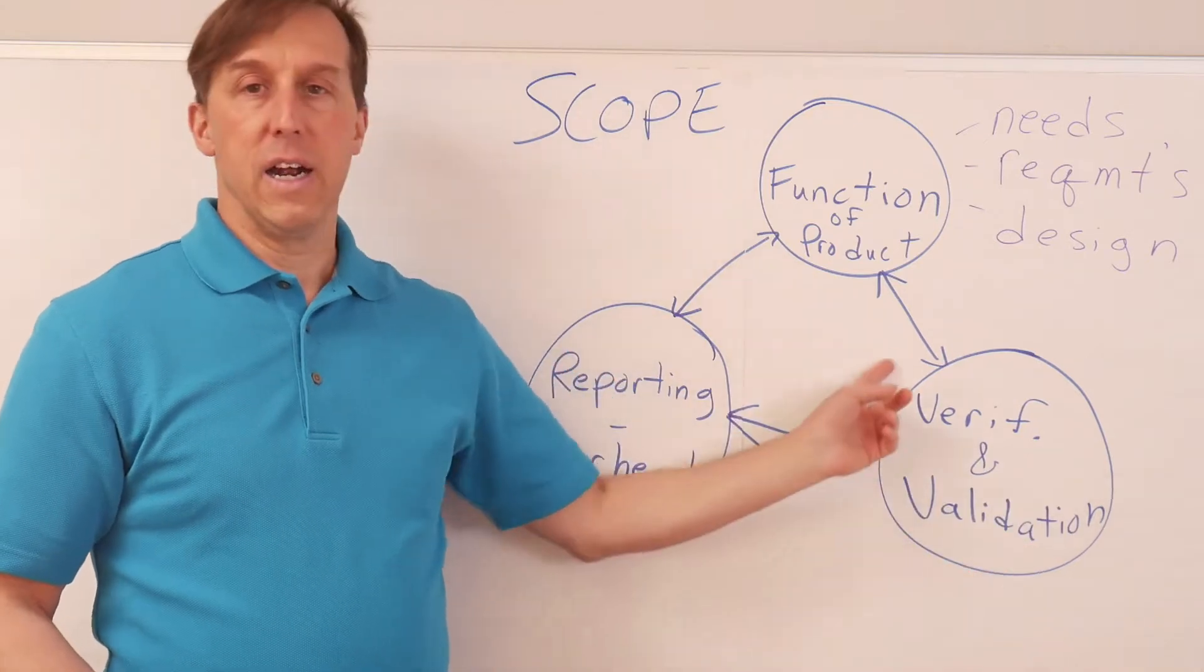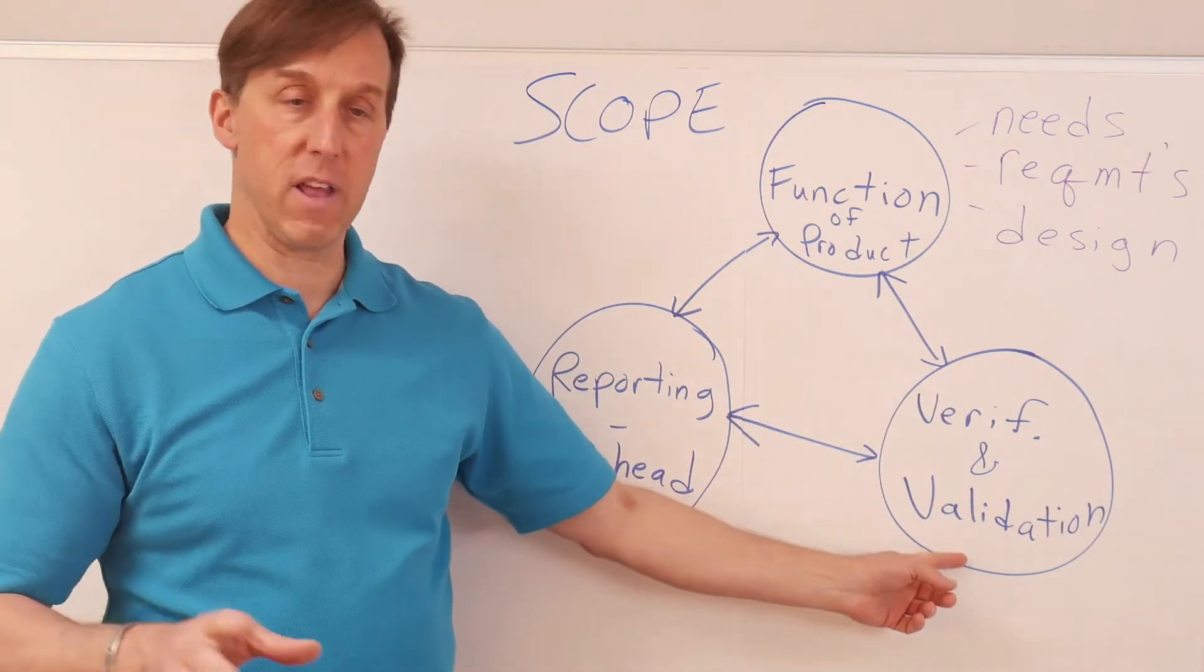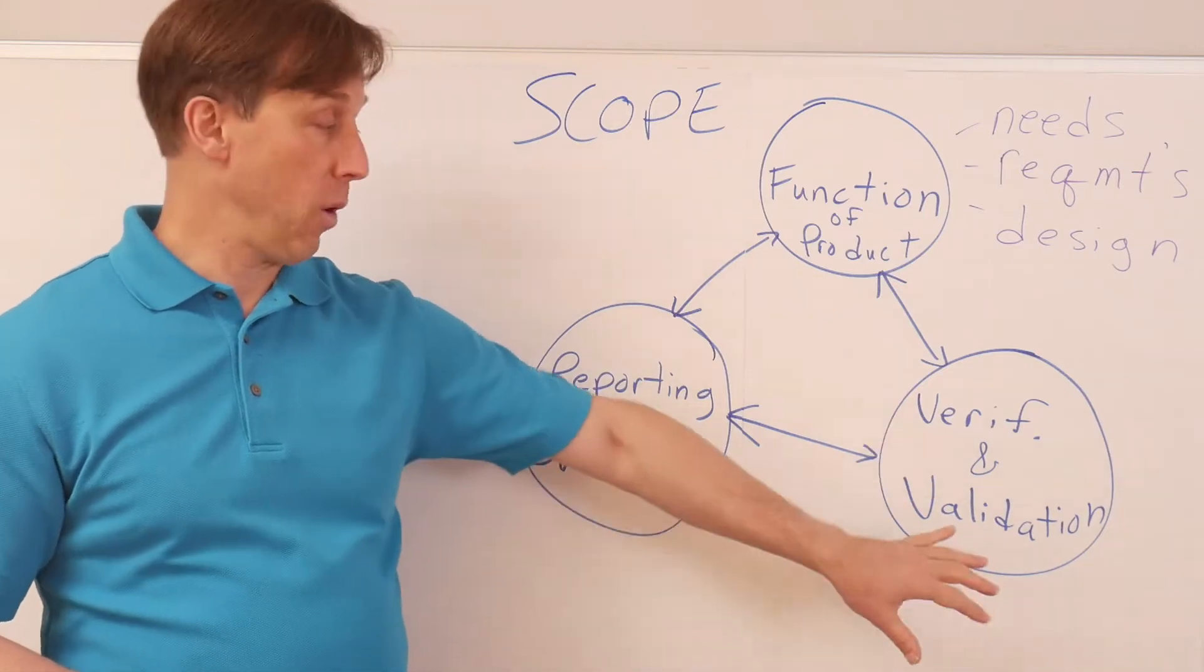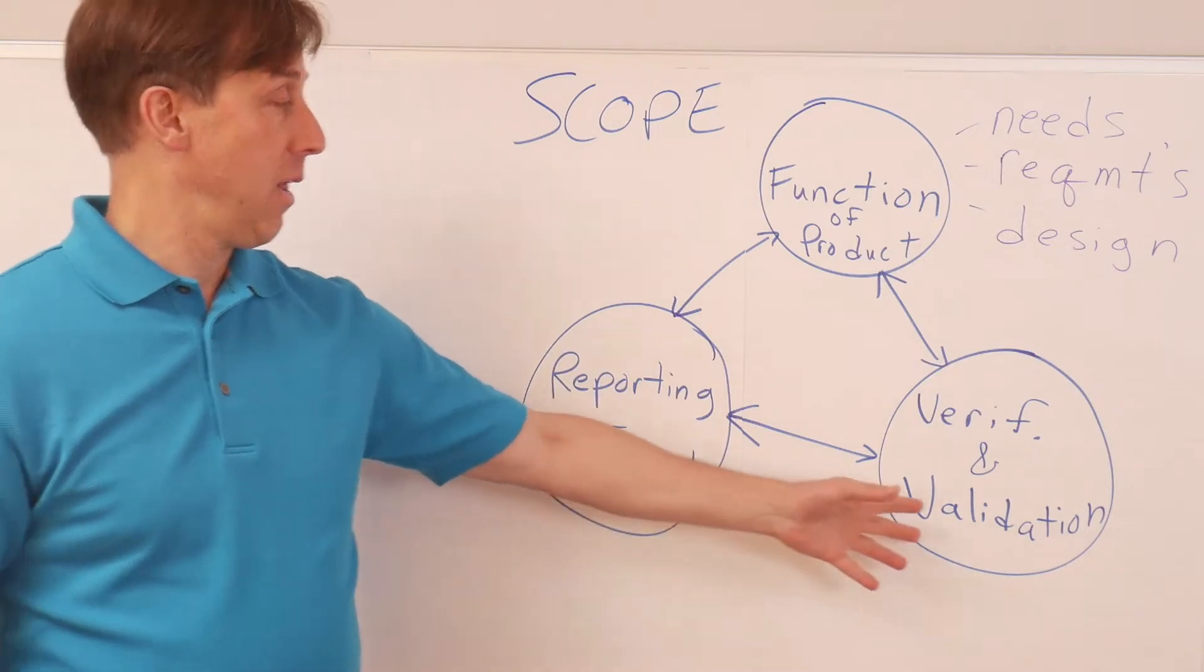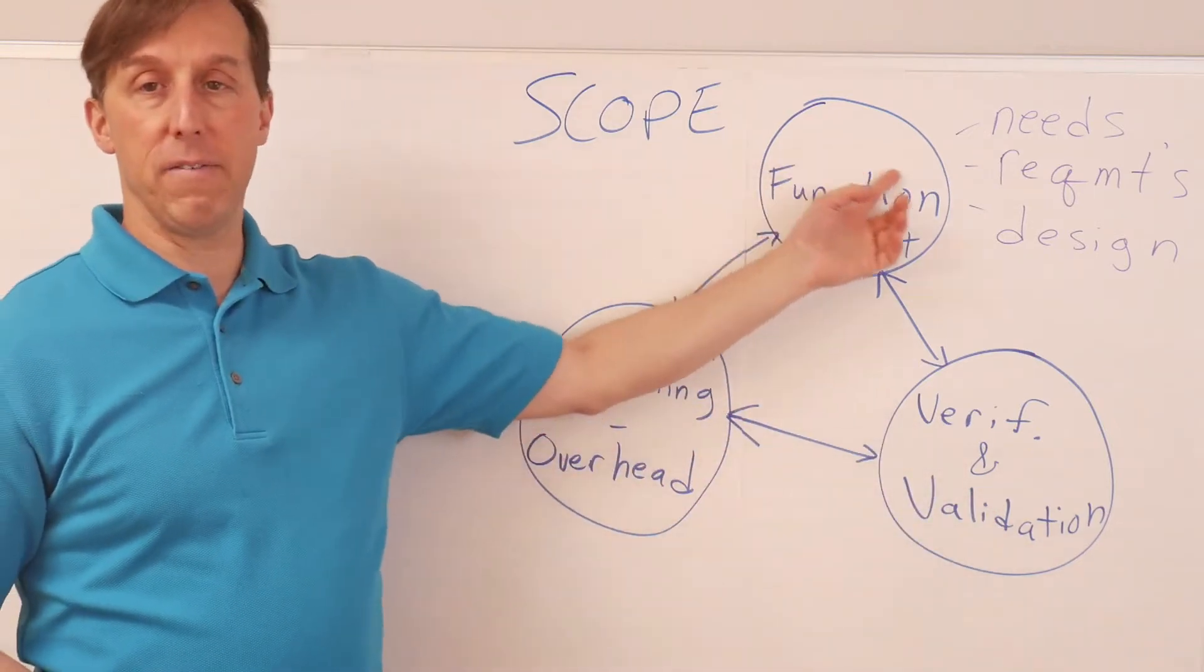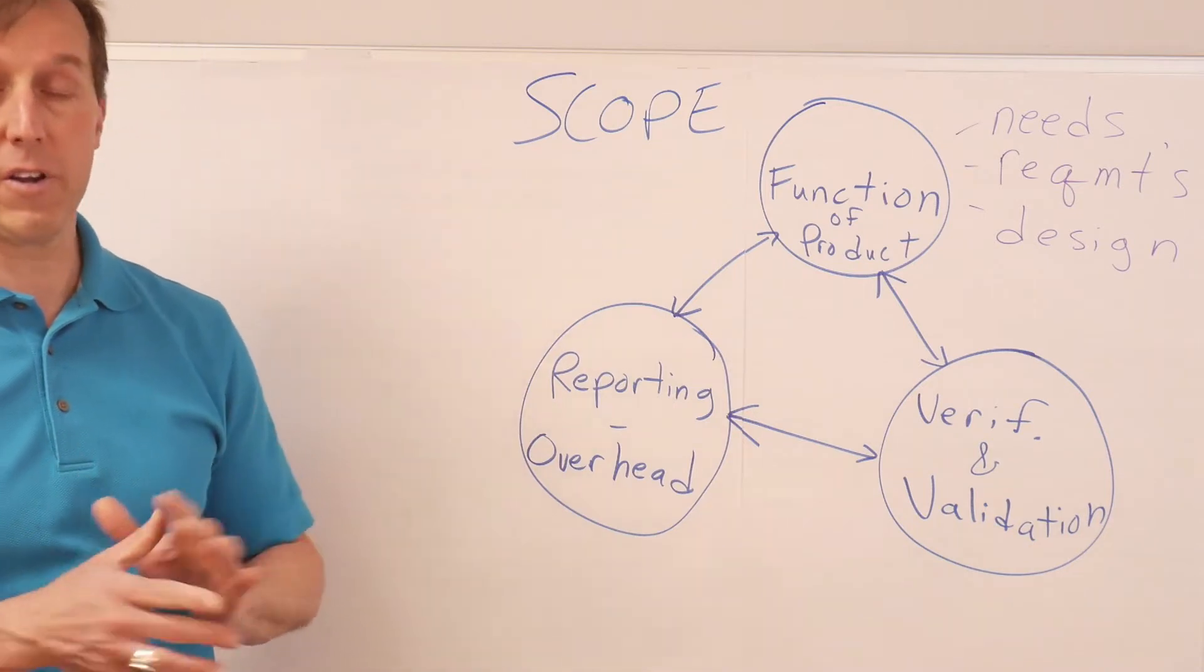So this very much ties into scope, because here is where you can either save a lot of money, or if you want to reduce your verification and validation, sometimes that's appropriate, then maybe you can put in a function that is a key customer desire, something that's very desired by the customer.